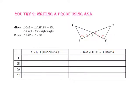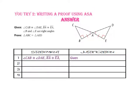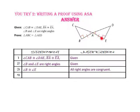Pause the video and do you-try number two. We want to prove triangle-ABC is congruent to triangle-AED. Given: angle-CAB is congruent to angle-DAE, and side-BA is congruent to side-EA. Angle-B and angle-E are both right angles, so angle-B is congruent to angle-E because all right angles are congruent. Therefore, triangle-ABC is congruent to triangle-AED by angle-side-angle.